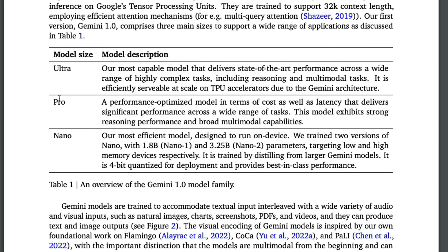In terms of model size, there are three different sizes: Ultra, Pro, and Nano. The Nano model is the most efficient and can run on-device — even on the Google Pixel 8 Pro. It comes in two versions: Nano-1 at 1.8 billion parameters and Nano-2 at 3.25 billion parameters, targeted at low and high memory devices respectively. These are trained by distilling larger models and are also 4-bit quantized for deployment.